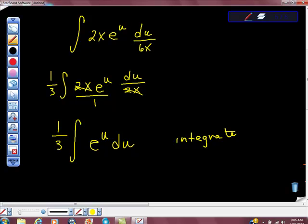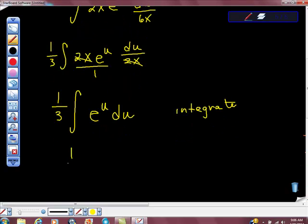So I'm going to integrate this. And when I integrate this, we're going to get 1/3 e^u plus C, because we know that's going to be a family of functions that's going to satisfy this.